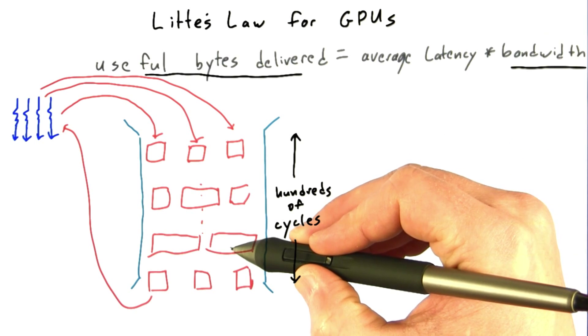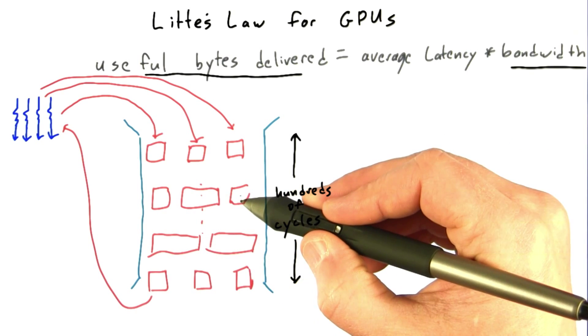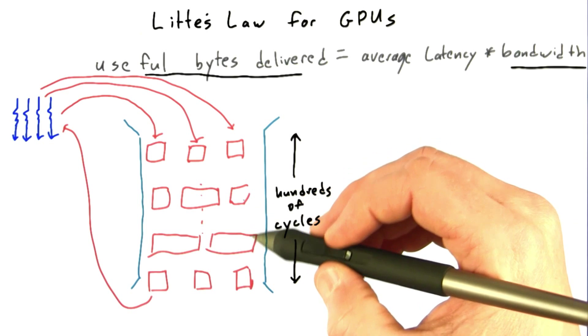If we can't make all of our memory transactions wider very easily, then we can try to have more transactions.